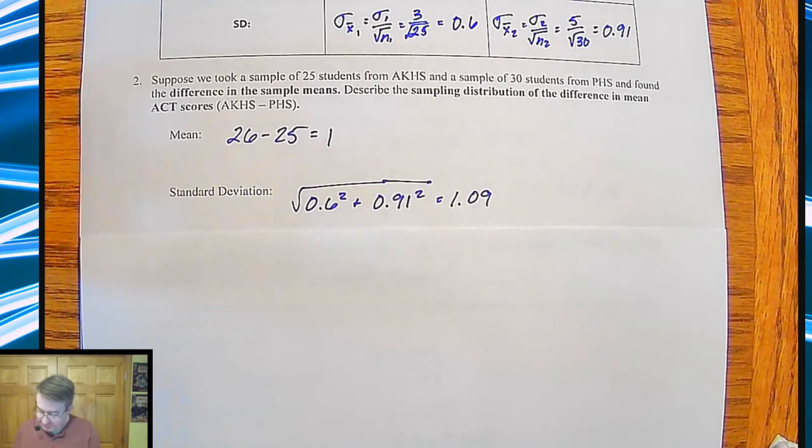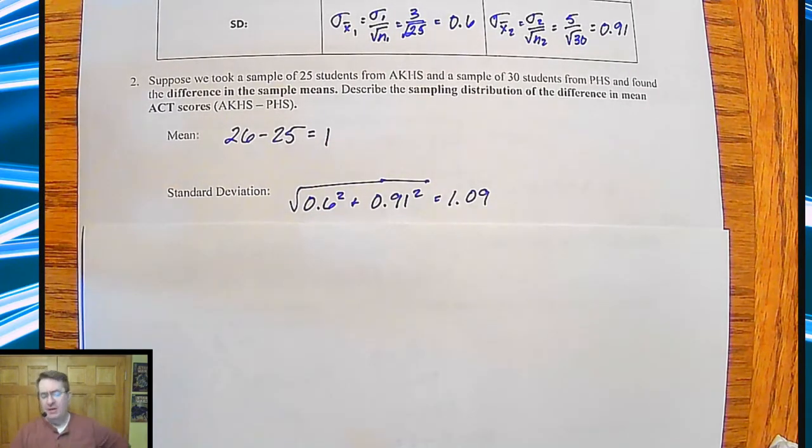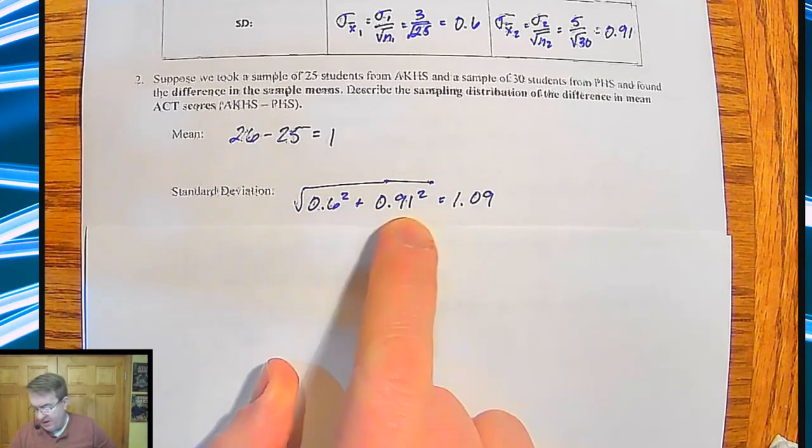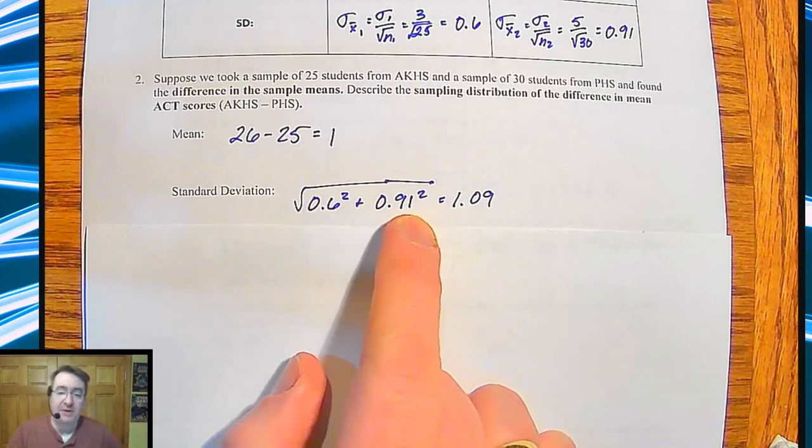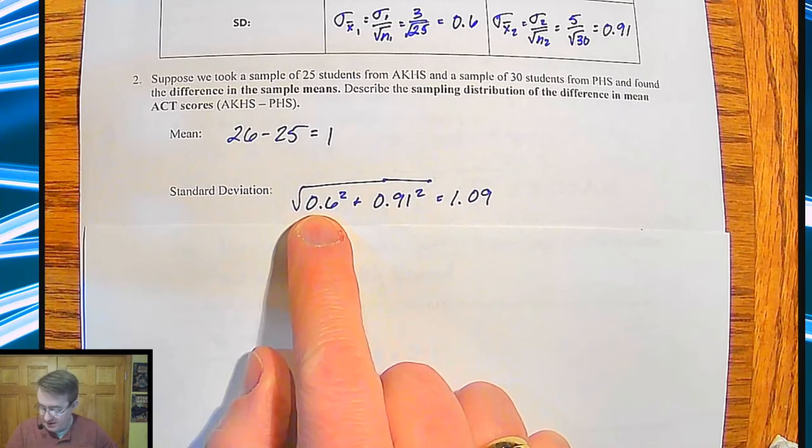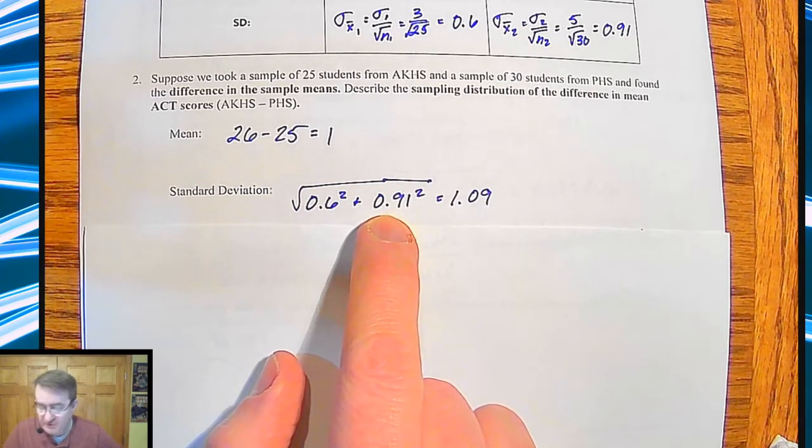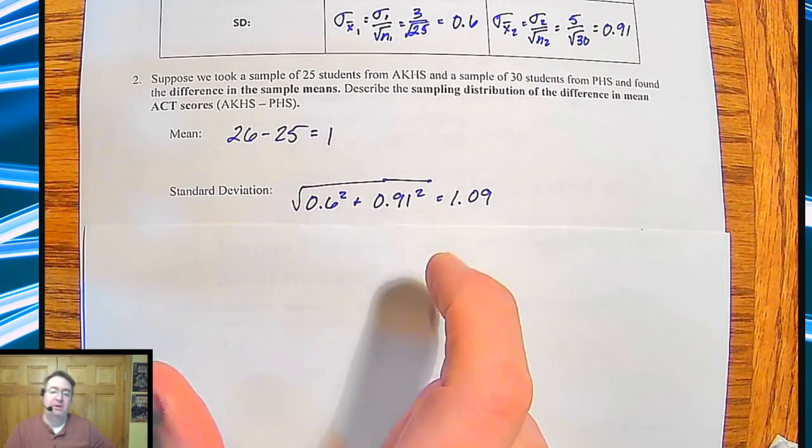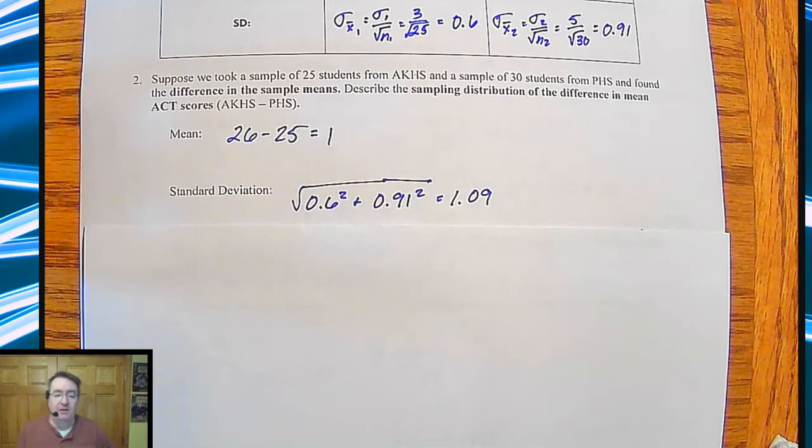Standard deviation. Remember, whenever we did combining things, whenever we do standard deviations or combining those, we have to square them first to get the variance before we square root them. We can't just add the two together. So that's why we're doing this. We take the standard deviation of AKHS squared plus the standard deviation of PHS squared, combine them, get the sum, take the square root.